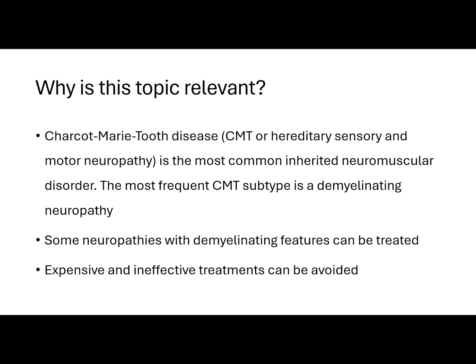Why is the differential diagnosis of demyelinating neuropathy so important? I'll start by giving you three reasons. First, Charcot-Marie-Tooth disease is the most common inherited neuromuscular disorder, and the most common CMT subtype, CMT1A, is a demyelinating neuropathy, so it's very likely that you will come across those patients at some point in your practice. Second, some neuropathies with demyelinating features can be treated — finding a potentially treatable cause is especially relevant for acquired neuropathies. Third, expensive and ineffective treatments can be avoided, especially in hereditary neuropathies.